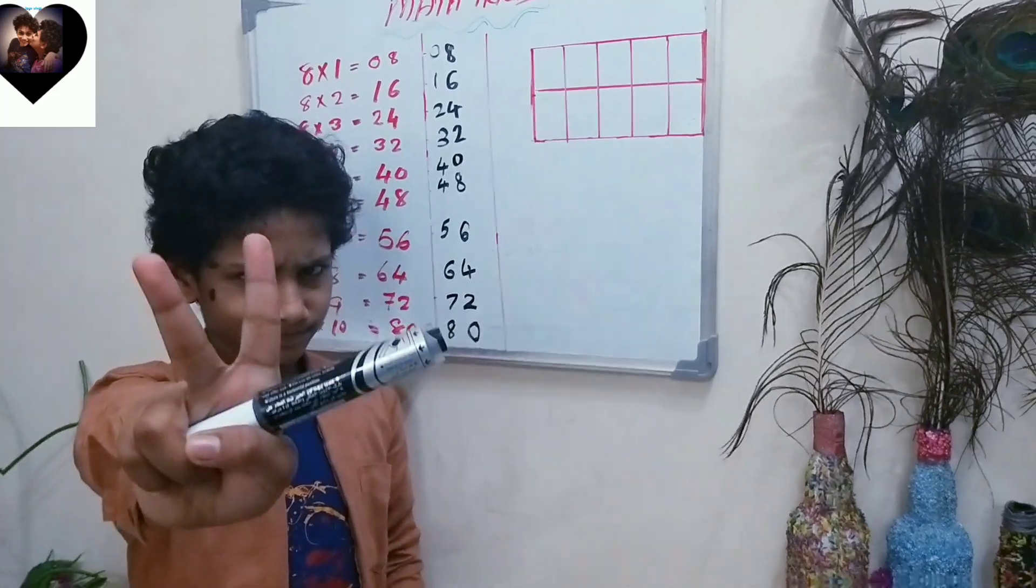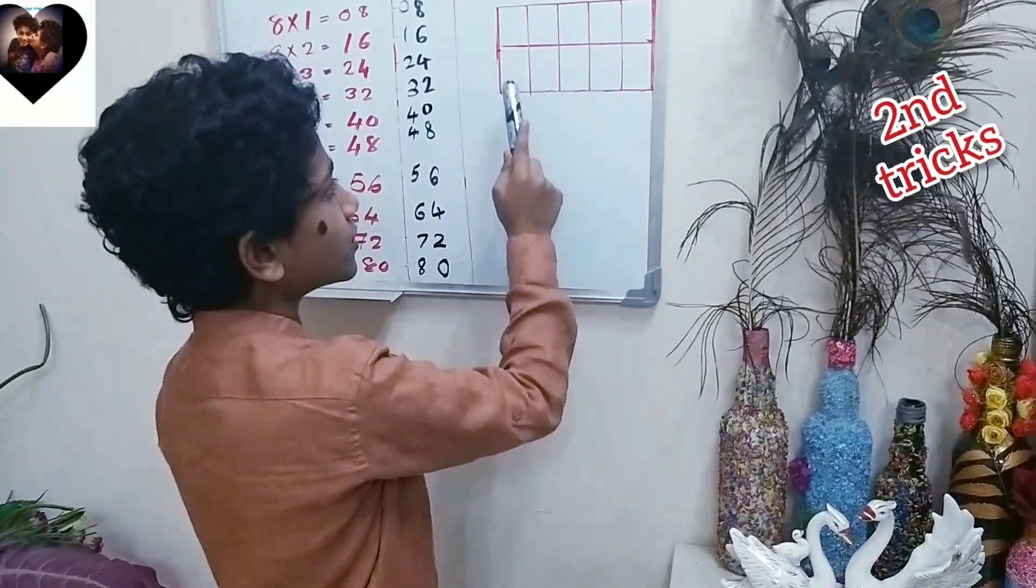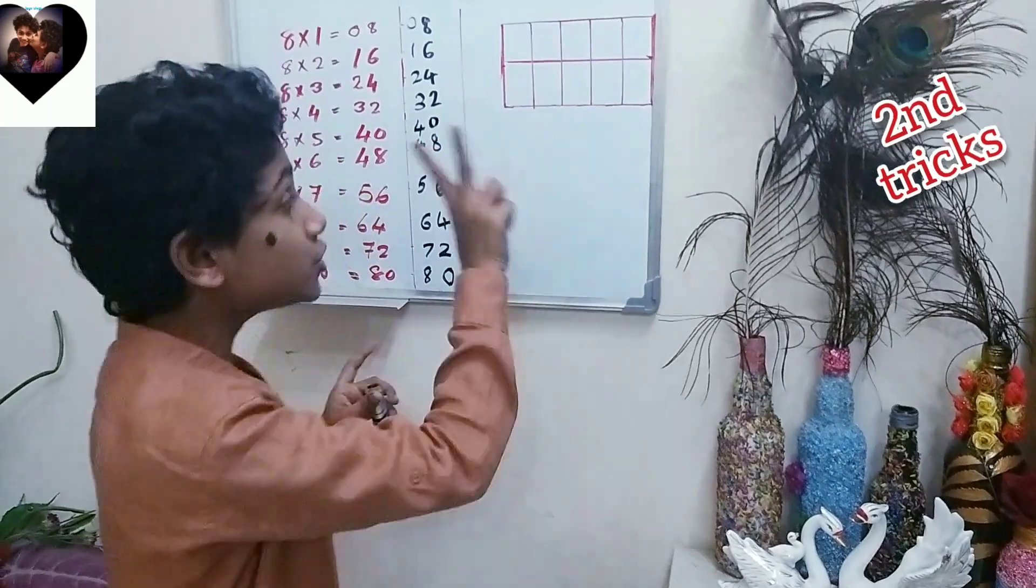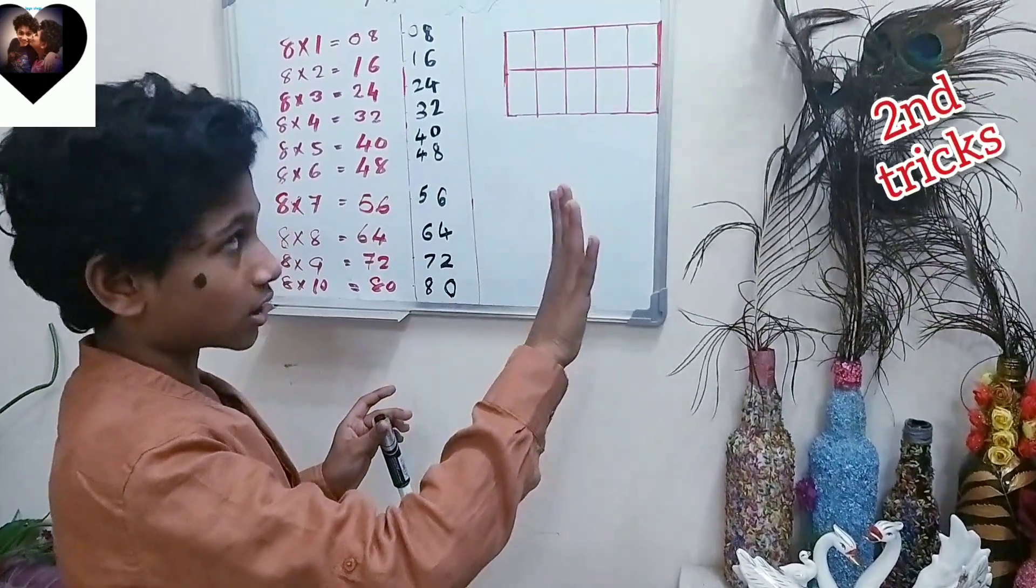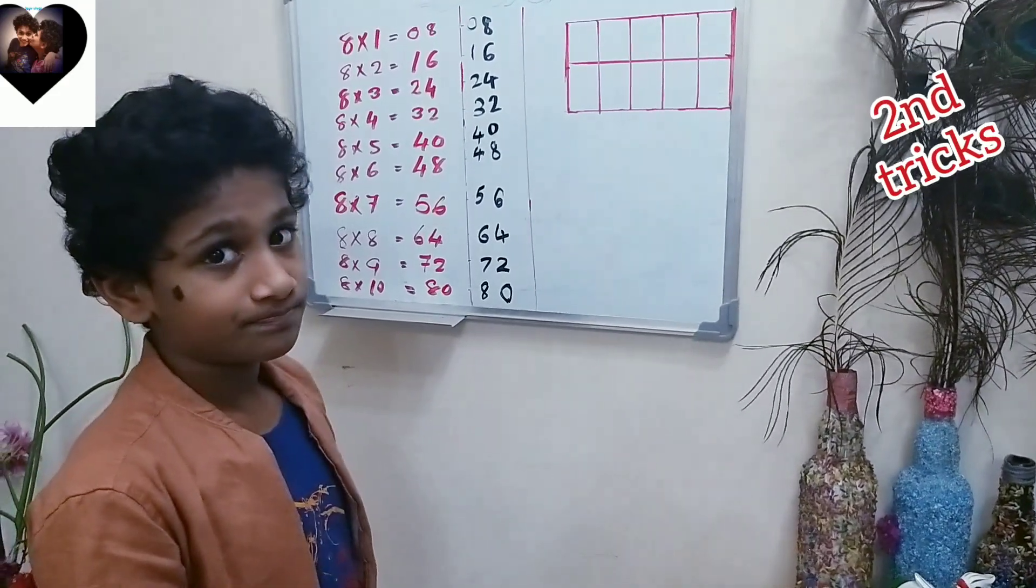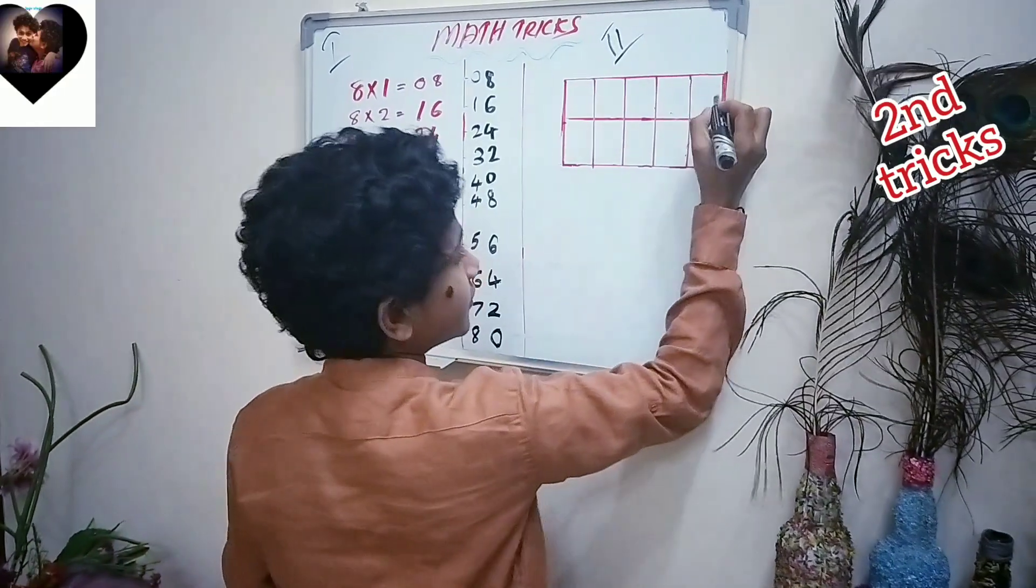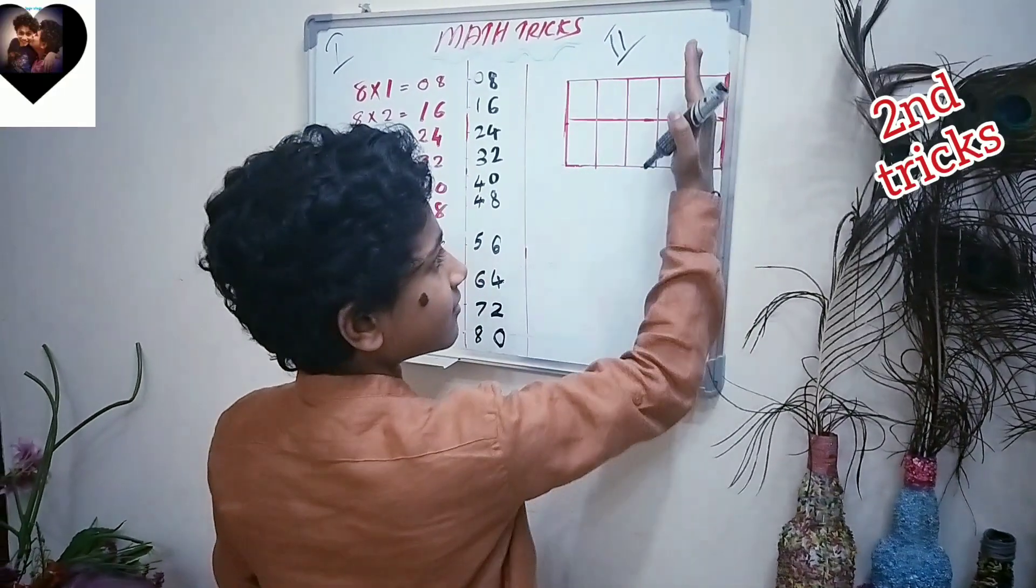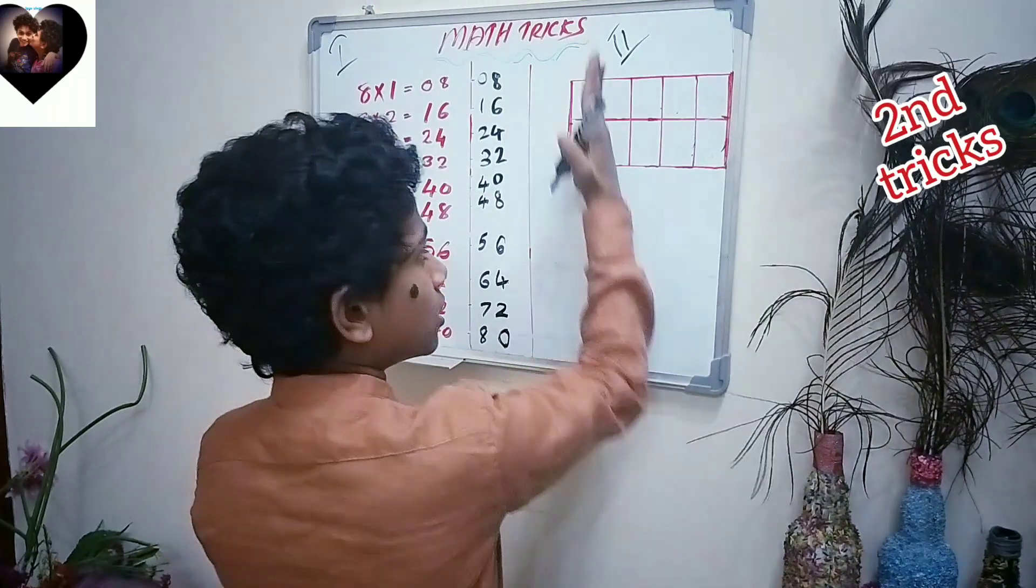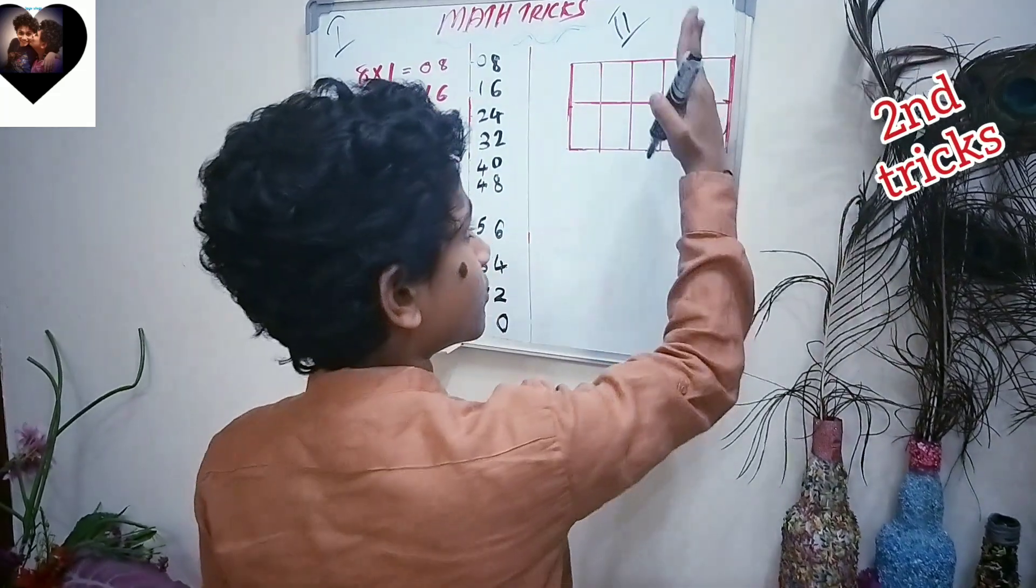Now let's go to trick number two. We have a small little box with two rows and five columns. In this box, the first thing you should write is the 2 times table. You write that - that's really easy. But leave the left side, all the left corners - the left side will be the tens place number.